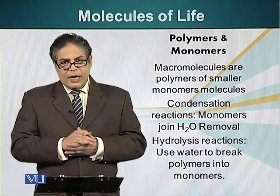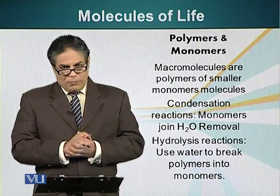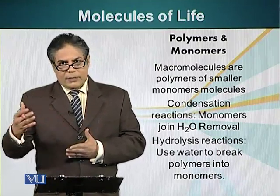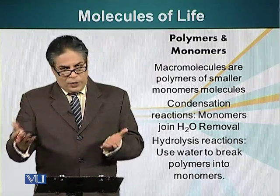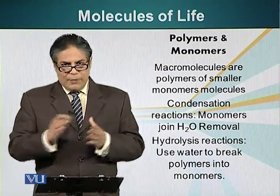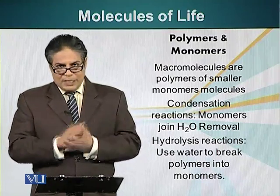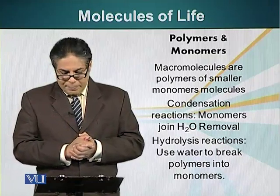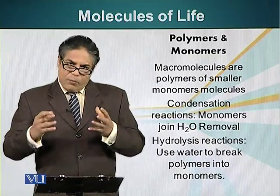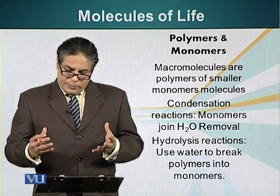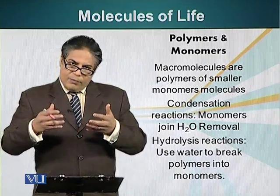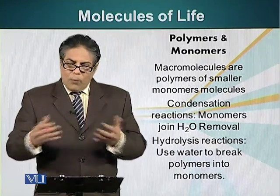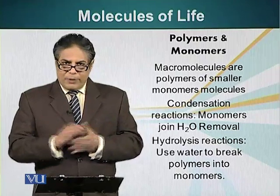We looked at the basic structure of some of these smaller units: amino acids, carbohydrates — we looked at glucose — and also the basic unit of DNA and lipids. These monomers form polymers by forming covalent bonds between them.